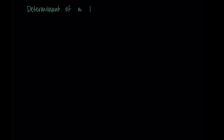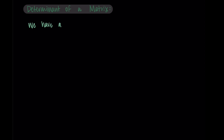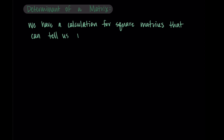Welcome back. In this video, we're going to start talking about the idea of a determinant of a matrix. We've been talking about inverse matrices, and we have another calculation that we do specifically with square matrices. We do inverses of square matrices, and we have a calculation that's going to help tell us if a matrix is invertible or not. The determinant is going to help us do that.